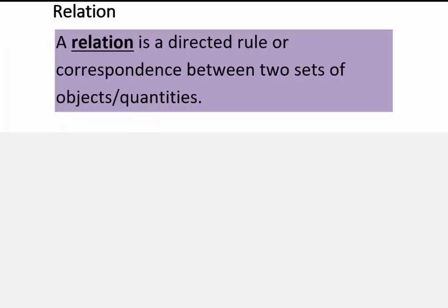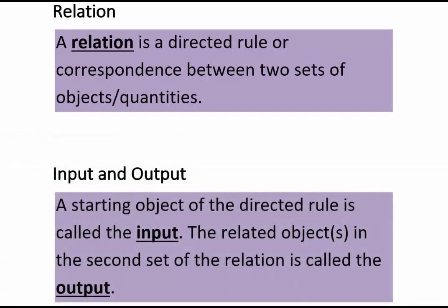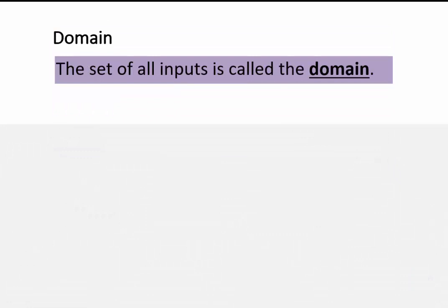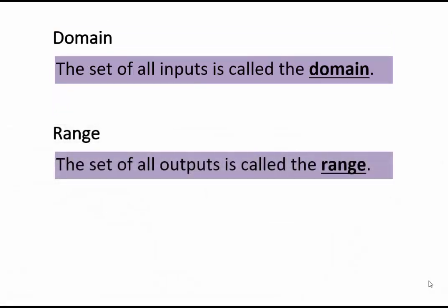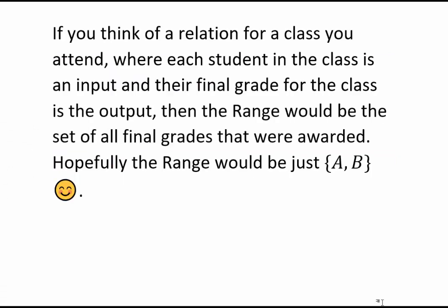So a relation is exactly what we just described. But in mathematical terms, you will say a relation is a directed rule or correspondence between two sets of objects or quantities. You have a starting object of the directed rule, which is called the input. And the related object in the second set of the relation is called the output. If you look at the set of all inputs, that's called the domain of the relation. And the set of all outputs is called the range of the relation.